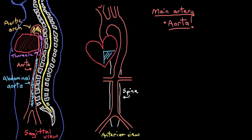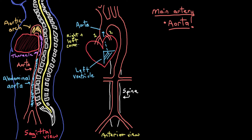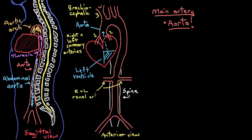Blood gets pumped out of the left ventricle and into the aorta, which has lots of little arteries branching off of it to take blood to different parts of the body. Going back to the highway analogy, the left and right coronary arteries would be exits one and two. Up here would be exit three, the brachiocephalic artery that supplies blood to your brain and to your right arm. Down here we have the left and right renal arteries that make sure your kidneys get enough blood, and then the left and right common iliac arteries that supply blood to your pelvis and lower limbs. There are a lot of other arteries that come off the aorta, but I've just shown you a few.